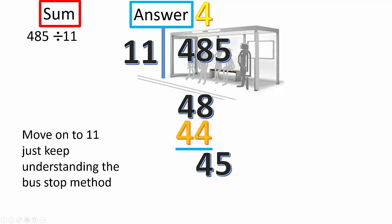So, 11 into 45. Oh, we've already done 44, so it's 4. Another 4. 4 times 11. We know it's 44. Now, if we take 44 from 45, we get 1. 4 from 4, nothing.